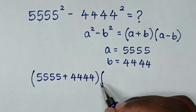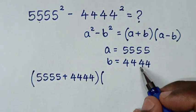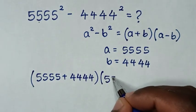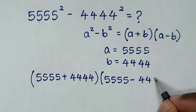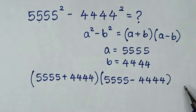times a minus b, which is 5555 minus 4444.